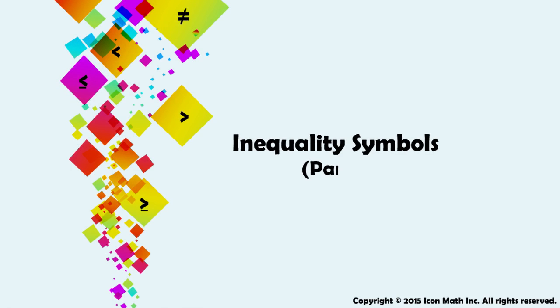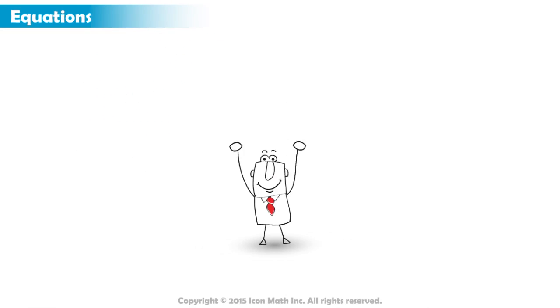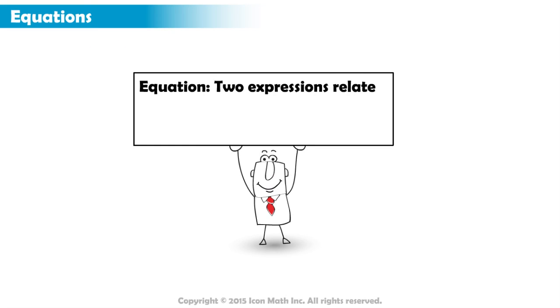Inequality Symbols. You've learned earlier that an equation is two expressions related with an equal sign, such as 3 plus 2 equals 5. This equation lets us know that 3 plus 2 is equal to 5.